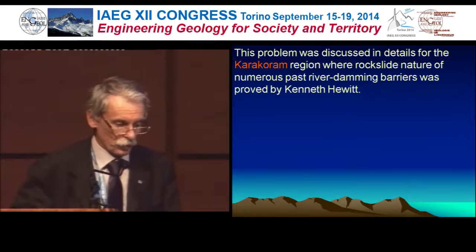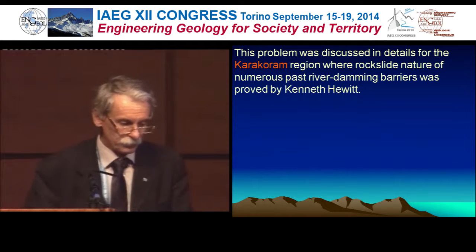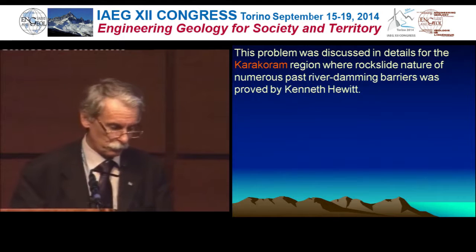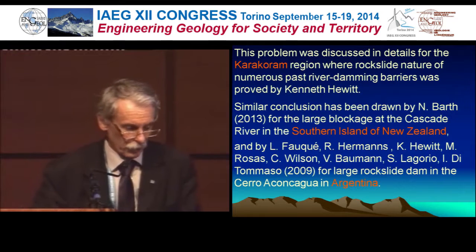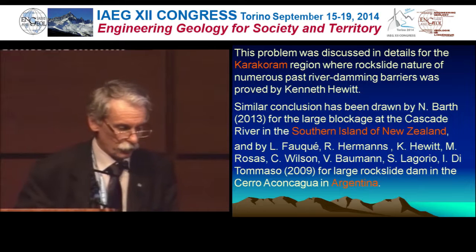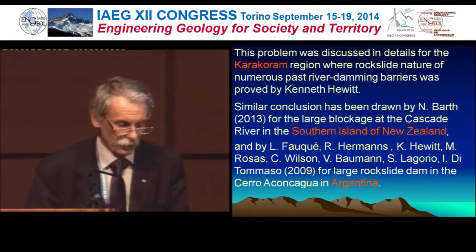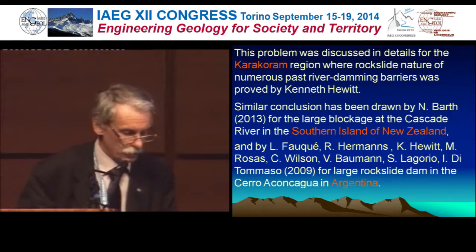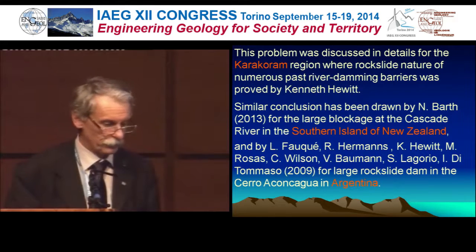This problem was discussed in detail for the Karakoram region, where a rockslide nature of numerous past river damming barriers was proved by Kenneth Hewitt in his excellent publications. Similar consideration has been drawn by Dr. Bass in 2013 for large blockades at the Cascade River in the southern island of New Zealand, and by an international team in 2009 for a large rockslide dam in Cerro Aconcagua in Argentina.